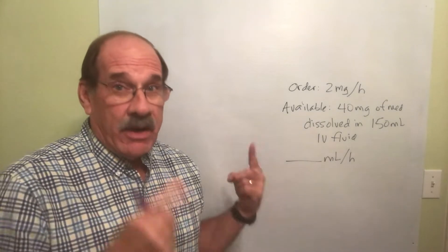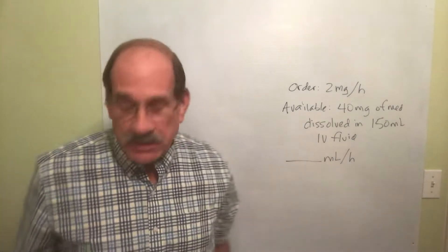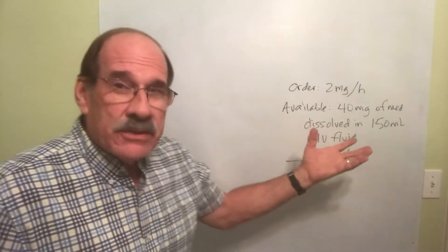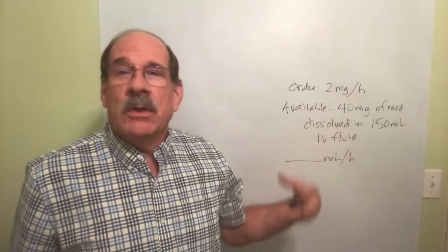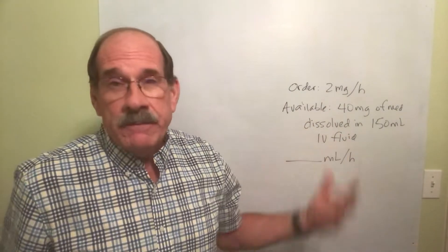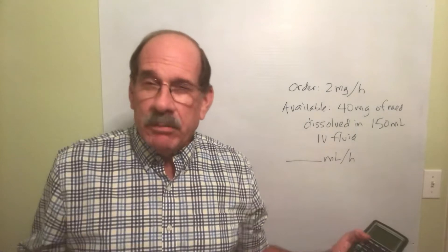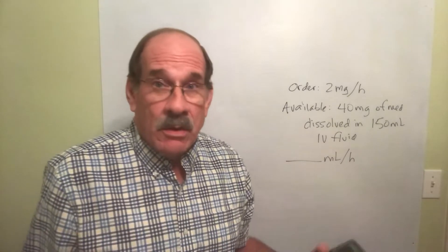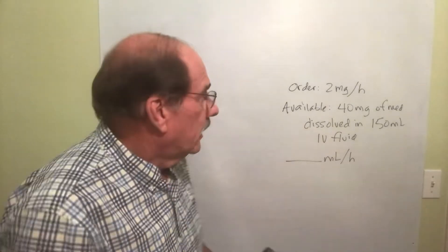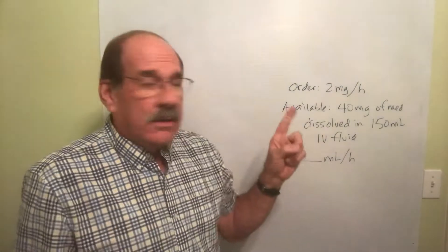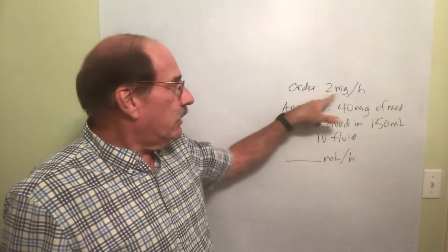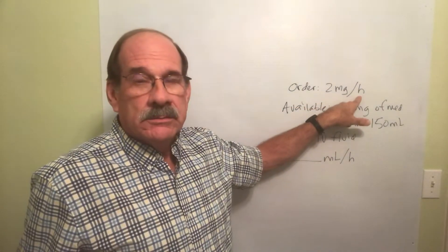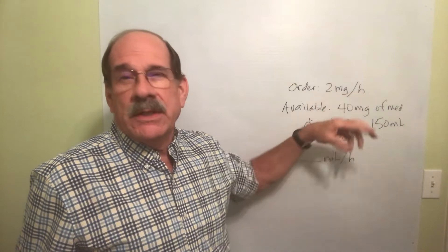We'll whip this one out really fast. It may not be written out this way in your homework — it'll be some word problem, but you can work out from there what's going on. The order is to give the patient two milligrams of some medicine per hour.